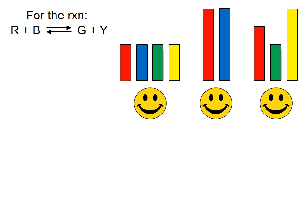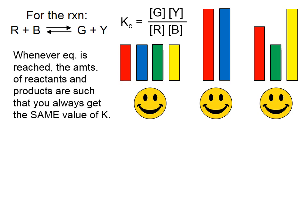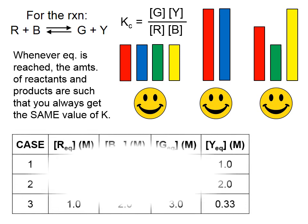And we had decided that yes, equilibrium could be reached if we started with these sets of reactants and products. If we were to write a Kc expression for this, we would write concentration of green times concentration of yellow divided by concentration of red and divided by concentration of blue. The coefficients are all 1 in our equation, so we haven't raised any of these concentrations to any particular power. And whenever equilibrium is reached, the amounts of reactants and products are such that you always get the same value of K.